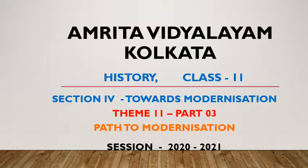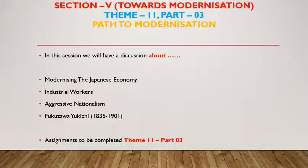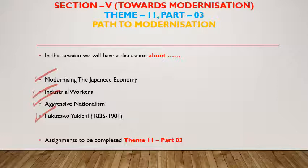Hello students, today we are going to start with Class 11 History, Section 4: Towards Modernization, Theme 11, Part 3: Path to Modernization. In this session we will have a discussion about modernizing the Japanese economy, industrial workers, aggressive nationalism, and Fukuzawa Yukichi (1835–1901). This will be followed by the assignment to be completed in Theme 11 Part 3.